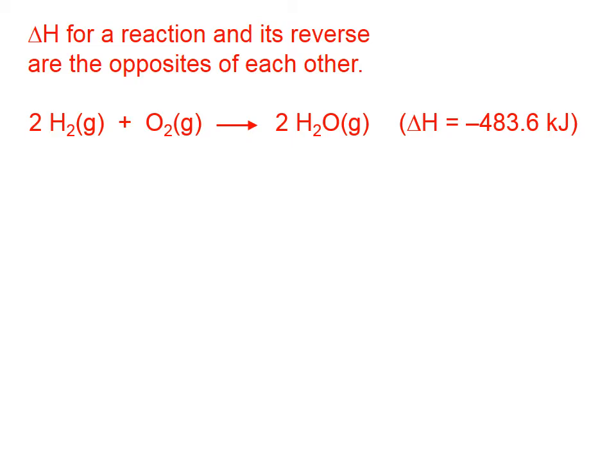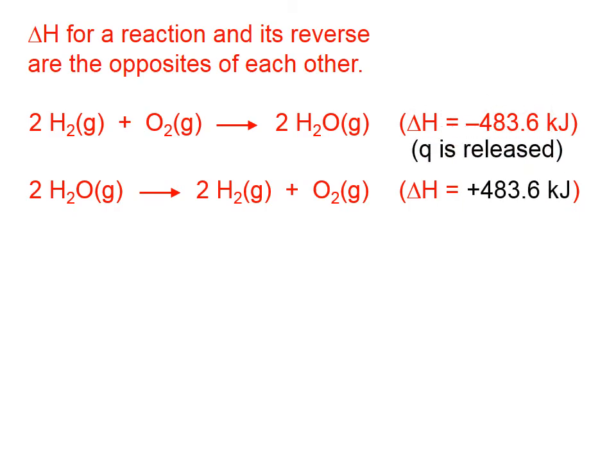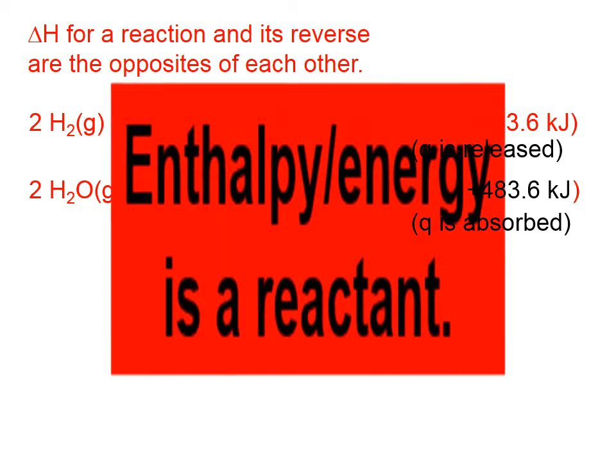It's understood that those coefficients represent moles whenever we see a delta H off to the side like this. If we flip that equation around, with the water vapor being the reactant, and the hydrogen and the oxygen being the products, then the enthalpy change has the opposite sign. And this shouldn't surprise us. We know that when we burn hydrogen, heat is released, so if we're going to decompose water vapor, we would have to put energy in.